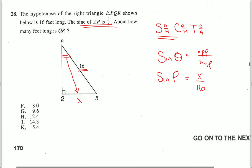But what they also told us in the problem is that the sine of P is three fifths. So setting up this problem as a ratio, three fifths is going to always equal X over 16.